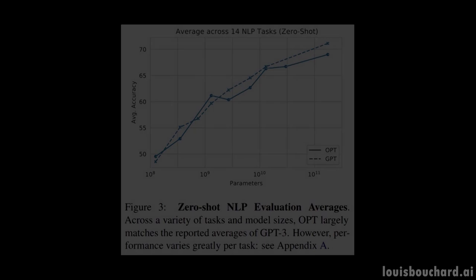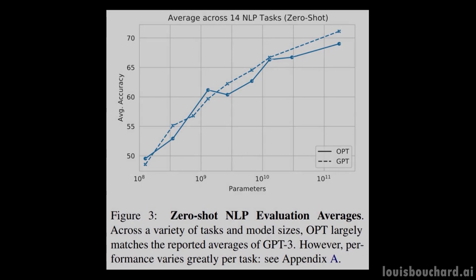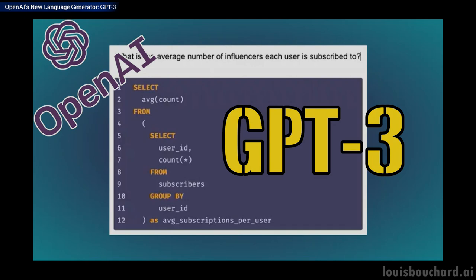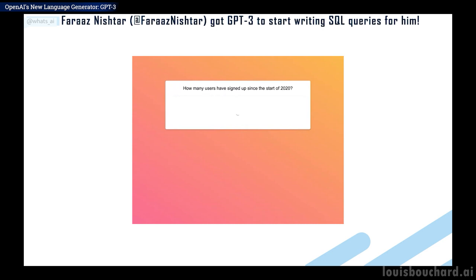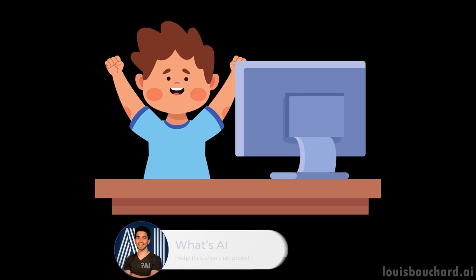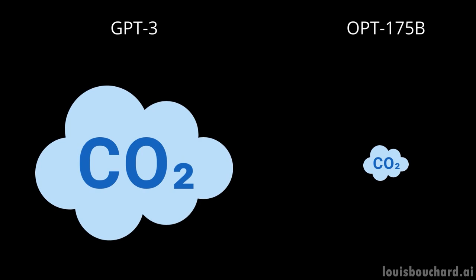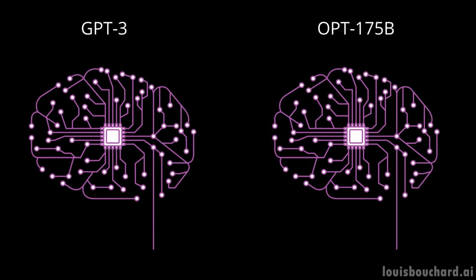OPT, or more precisely OPT-175B, is very similar to GPT-3, so I strongly recommend watching my video to better understand how large language models work. GPT-3 and OPT can not only summarize your emails or write quick essays based on a subject — they can also solve basic math problems, answer questions, and more. The main difference with GPT-3 is that OPT is open source, which means you have access to its code and even pre-trained models to play with directly. Another significant fun fact is that OPT's training used a seventh of the carbon footprint of GPT-3, which is another step in the right direction.